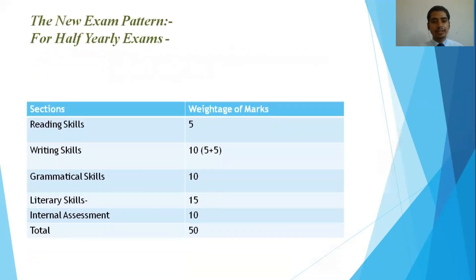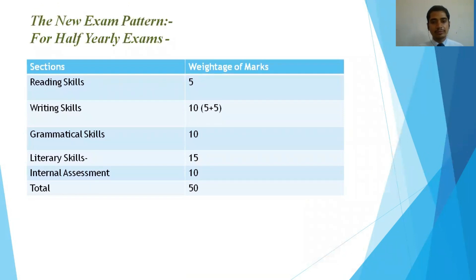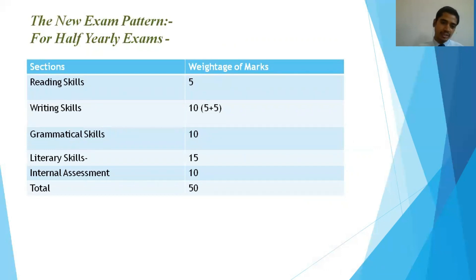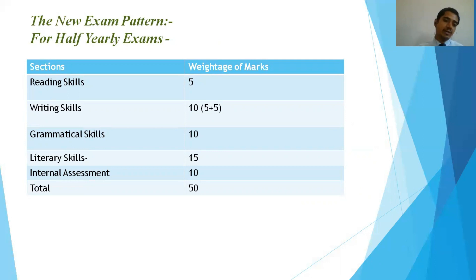The new exam pattern will be based on: reading skills — five marks, that is your comprehension or unseen passage; writing skills, which can include letter writing, story writing, or notice writing; grammatical skills — questions from grammar; and questions from the literature textbook. All these questions will be MCQ based. Then you will have 10 marks for the internal assessment, which will make the overall paper 50 marks.